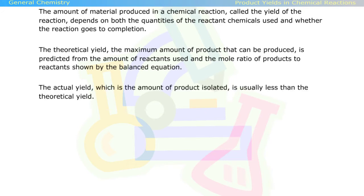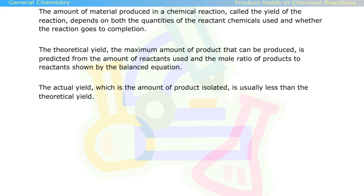The actual yield, which is the amount of product isolated, is usually less than the theoretical yield. The percent yield is calculated using the following equation.